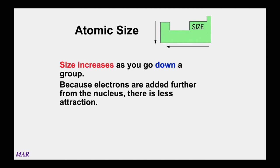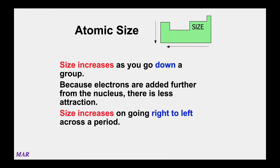The first important periodic property is size — the sizes of atoms. The key thing to realize is that size basically increases as you go left and down on the periodic table. If someone asked which is bigger, sodium (11) or rubidium (37): rubidium is lower, so rubidium is bigger. Between sodium (11) and magnesium (12), sodium is more to the left, so sodium is bigger.